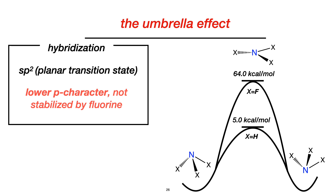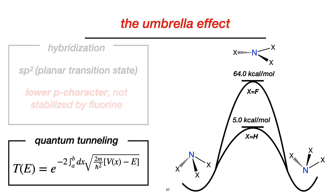Let me put a disclaimer here: there is another effect responsible for this inversion, and that is quantum tunneling. If we take a look at the equation describing the transmittance in this effect, we can easily see that it depends on the mass of the particle, and obviously hydrogen is lighter than fluorine, tunneling more easily and allowing the umbrella effect to happen in ammonia but not in nitrogen trifluoride.